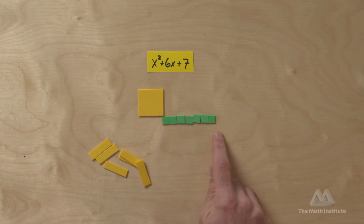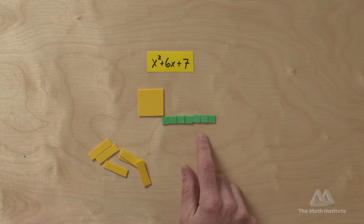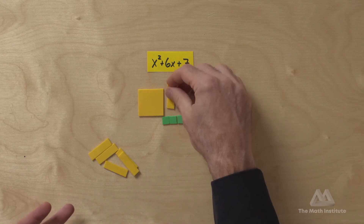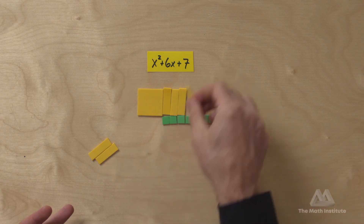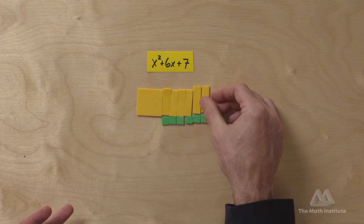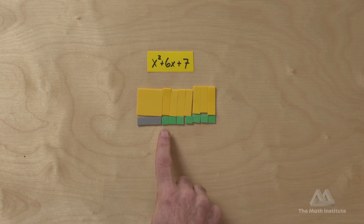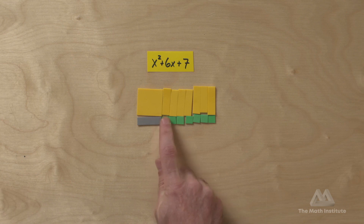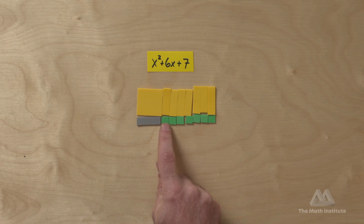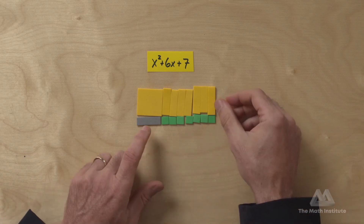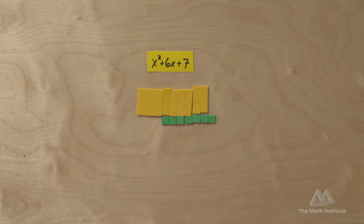Here's our x squared and our seven units, which have to make a rectangle — and this is the only possible rectangle we can make. We could try to put our six x's in and then be tempted to add a zero pair to make a full rectangle, because we've done that before — this is still 6x: seven positive x's and one negative x. But we can't do that here because the constant is positive, meaning we'd need either all positives or all negatives on both sides, and there's no way to do that. So x squared plus 6x plus 7 cannot be factored.